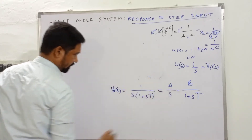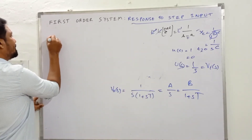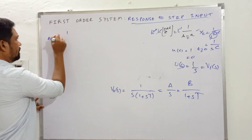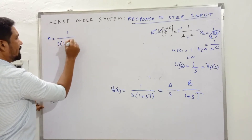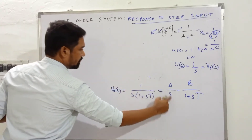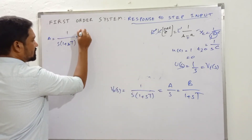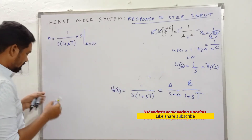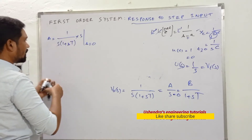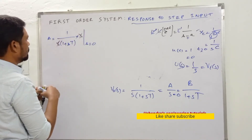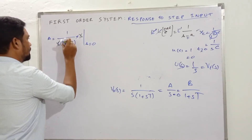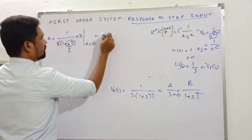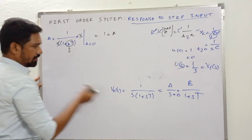To evaluate residue A: multiply 1/(s(1 + sT)) by s, then set s = 0. The s terms cancel, and substituting s = 0 into 1/(1 + sT) gives 1/(1 + 0) = 1. Therefore A = 1.